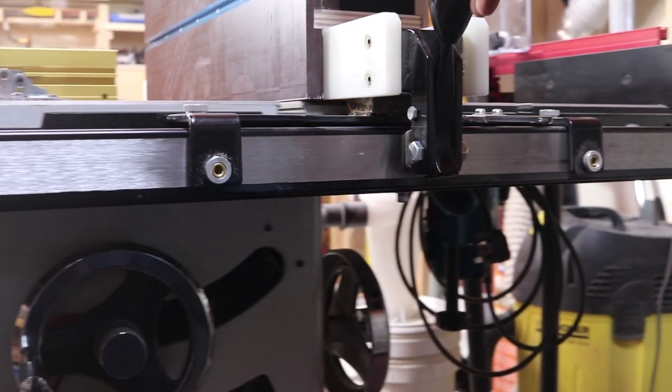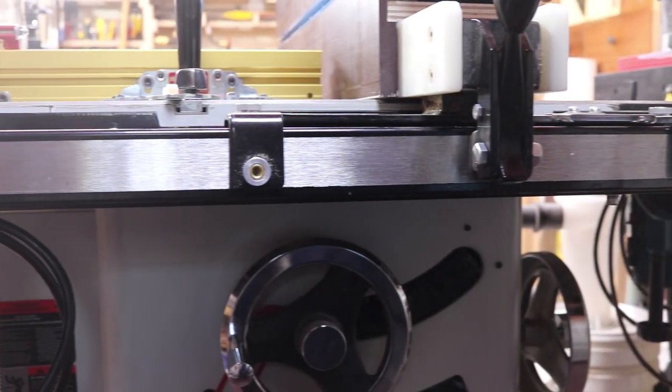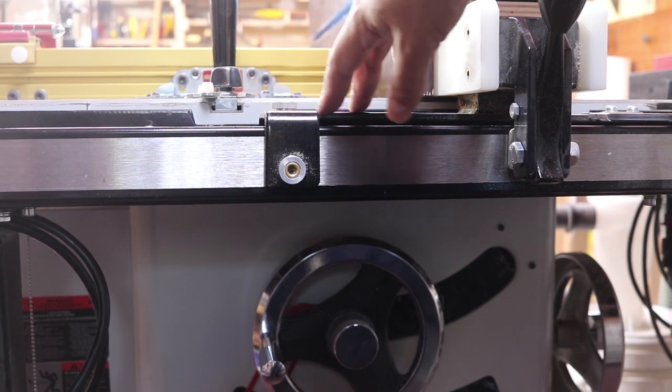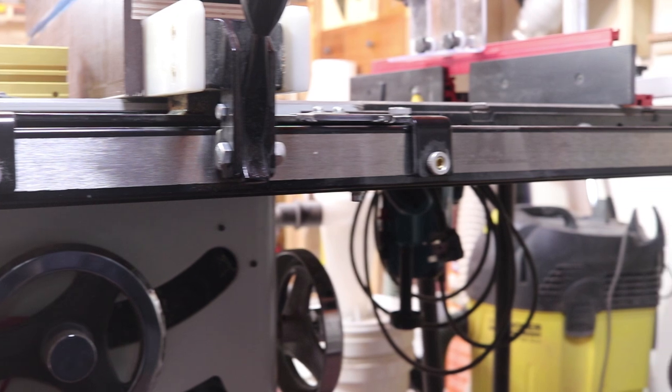The table saw fence is riding on parallel front and back rails, and if calibrated properly will reward you with accurate cuts every time without the need for any measurement.